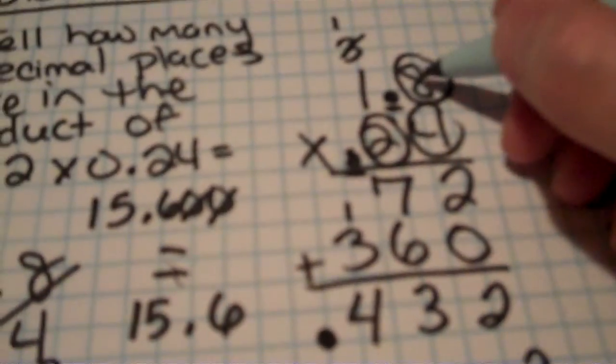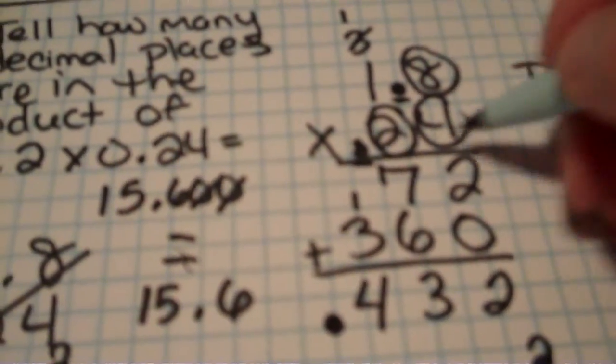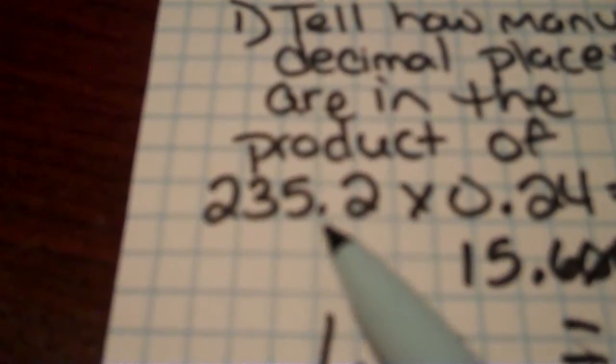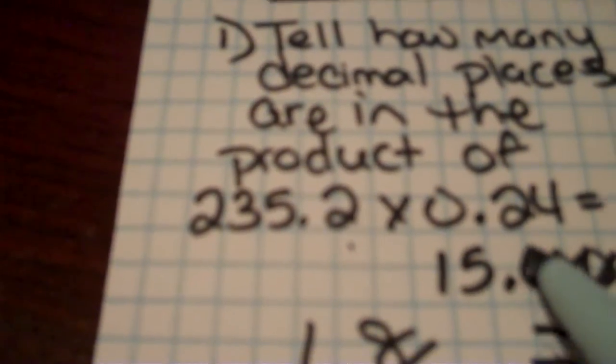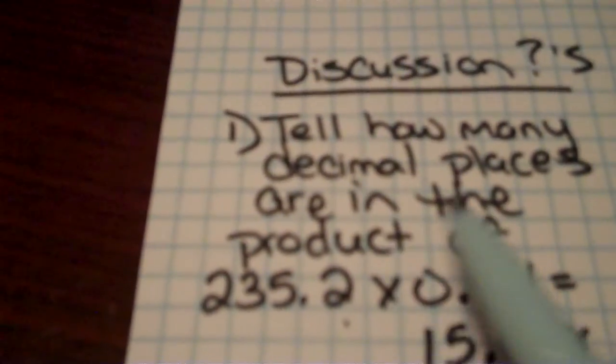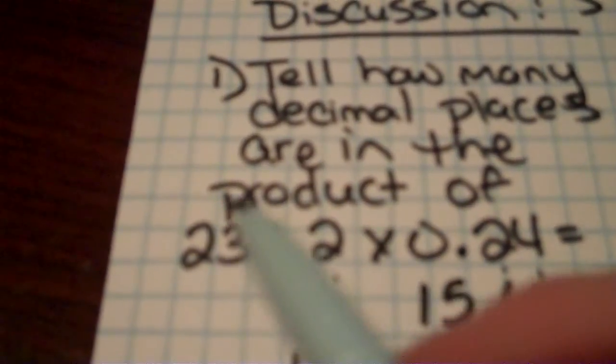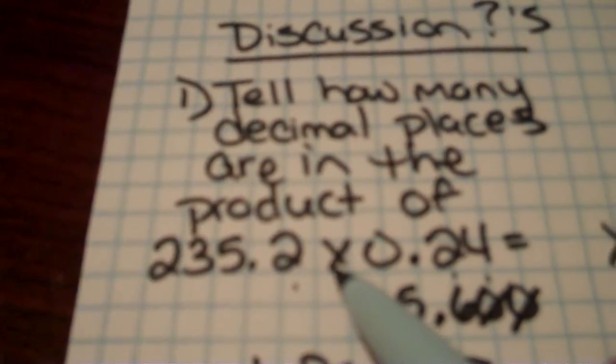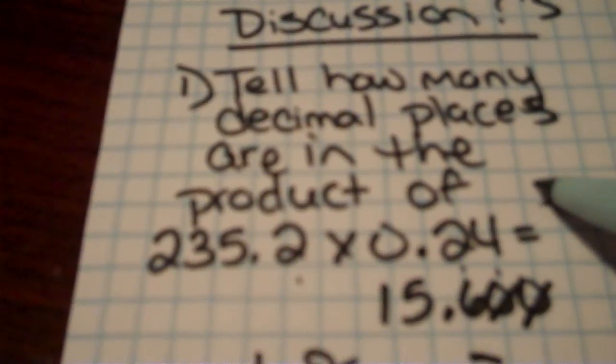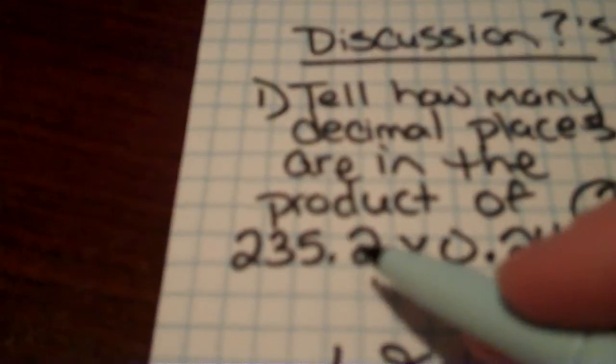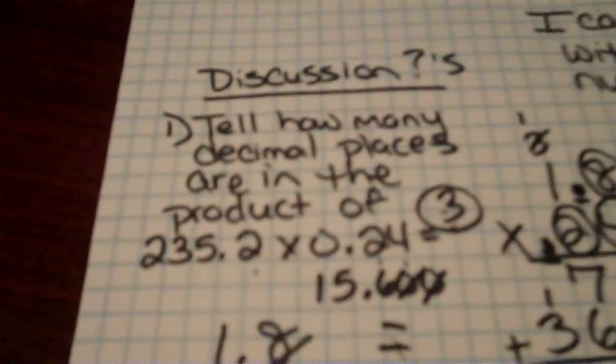So what I could do, what did we say? We counted the number of numbers behind the decimal point. So how many numbers are behind decimal points? I've got one, two, three. So how many decimal places are in the product? Remember product is the answer to a multiplication problem. The answer for this problem would be three. There would be three decimal places in the product of this problem.